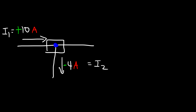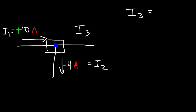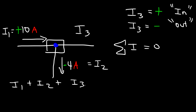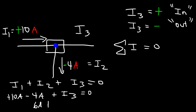Now let's calculate I3. Take a guess: is I3 flowing into the junction or out of it? Once we calculate I3, if it's a positive value, the current flows into the junction. If it's negative, the current flows out. The sum of all currents must equal zero, so I1 plus I2 plus I3 equals zero. I1 is positive 10 and I2 is negative 4, so 10 minus 4 equals 6, meaning I3 is negative 6.